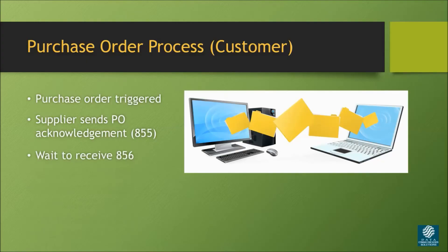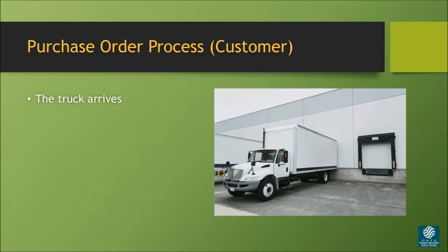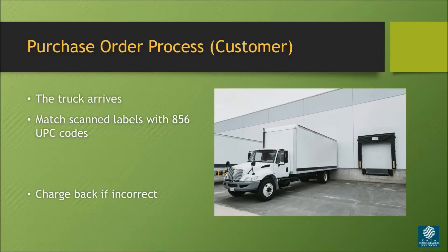After receiving the 855, you wait to receive the 856, confirming that the truck is on the way. Once the truck arrives, you need to confirm that you've received what the supplier said they would send you. You do this by scanning the product and matching the scanned labels with the UPC codes contained within the 856. If the supplier didn't send the product correctly, you can charge them in what is called a chargeback.